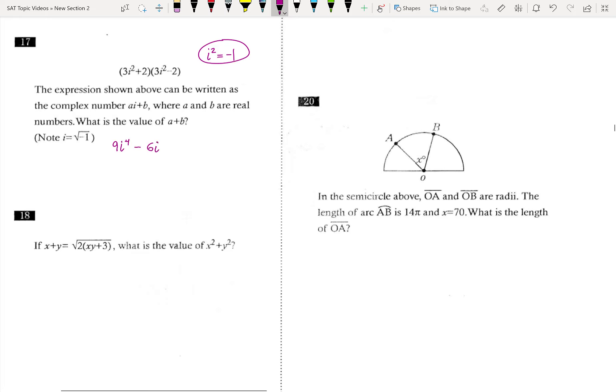minus 6i squared plus 6i squared minus 4. Well, hopefully you see that these are actually just going to cancel. So we're going to get 9i to the fourth minus 4, and we know that i squared equals negative one.